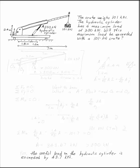The crate weighs 101 kN. The hydraulic cylinder at A has a maximum load of 300 kN. Will this maximum load be exceeded with a 101 kN crate?